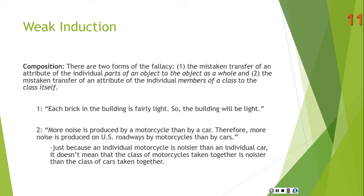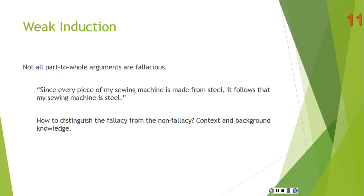You can see that just because an individual member of a class has a certain feature, it doesn't mean that the whole class has that feature taken together. Note, though, that not all part-to-whole arguments are fallacious. You can rightly argue that since every piece of my sewing machine is made from steel, my sewing machine is made from steel — the whole is exhausted by the parts. You can't have a general rule distinguishing fallacious from non-fallacious uses; you have to look at context and background knowledge.